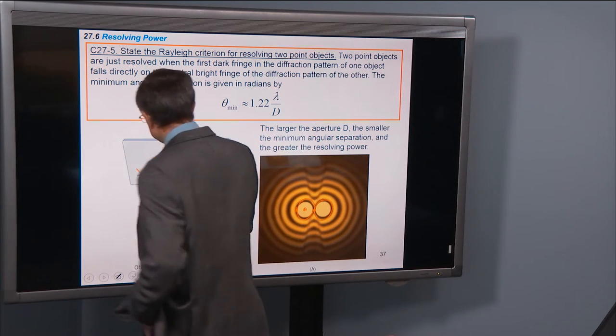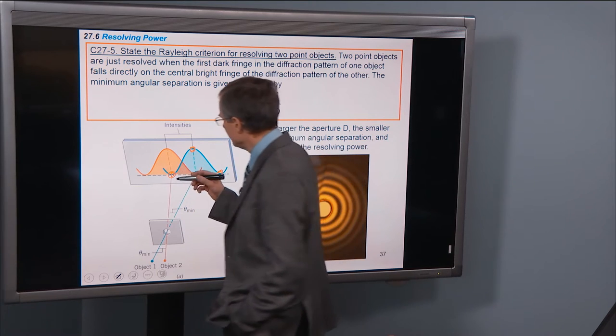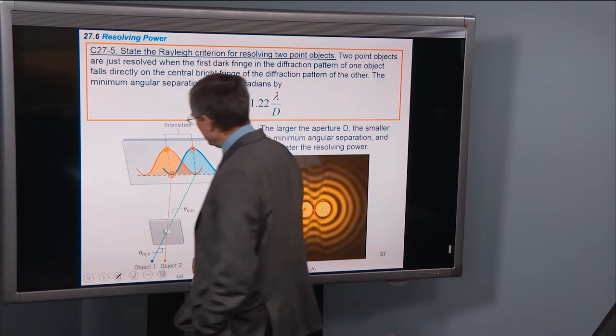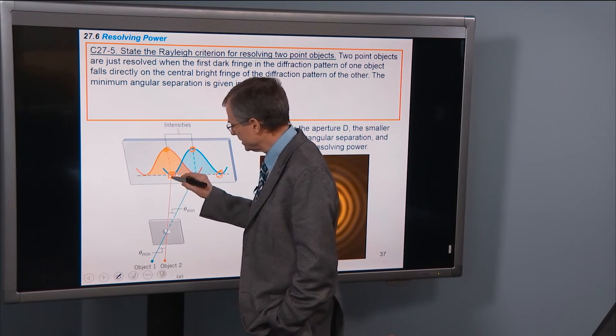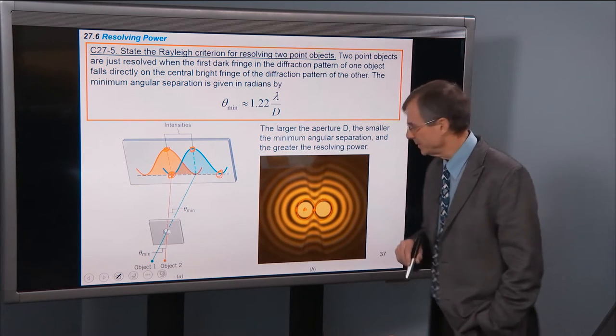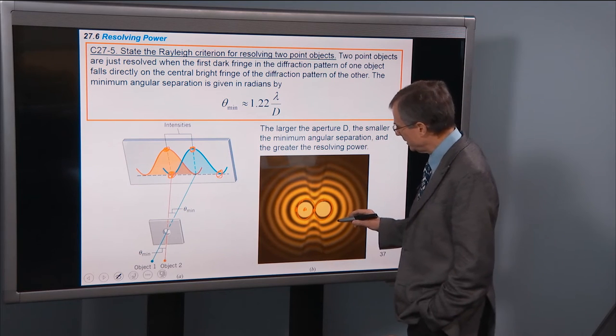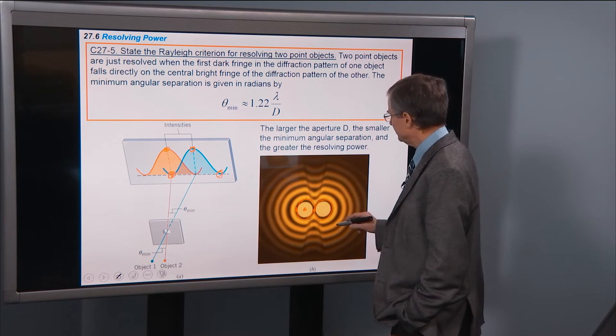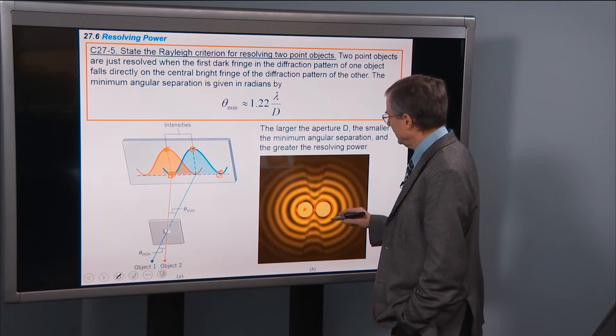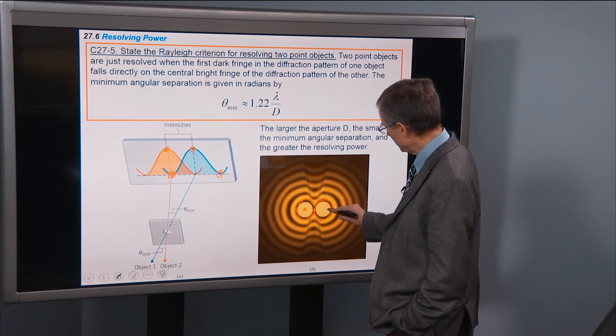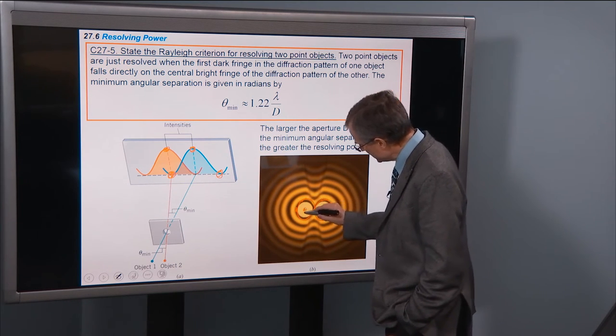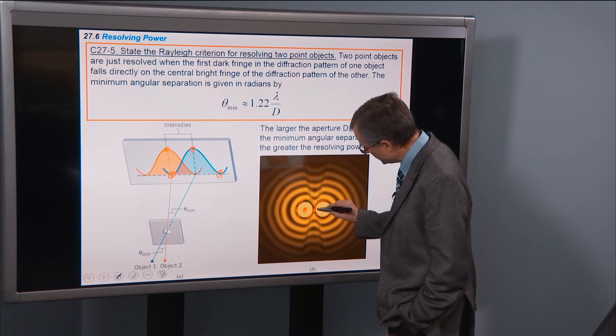So here's the other object represented in red. Here's his central bright fringe, and it corresponds, it's in the same spot as the dark fringe from the other. And that's what you see right here. Actually, this is not quite that situation, because we want this central bright fringe to coincide exactly with the dark fringe of this guy.